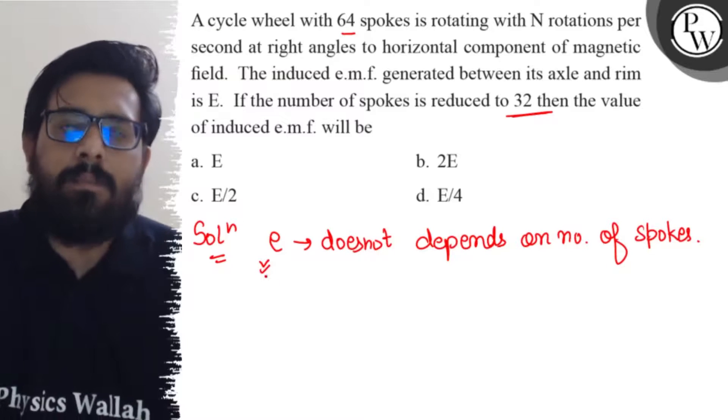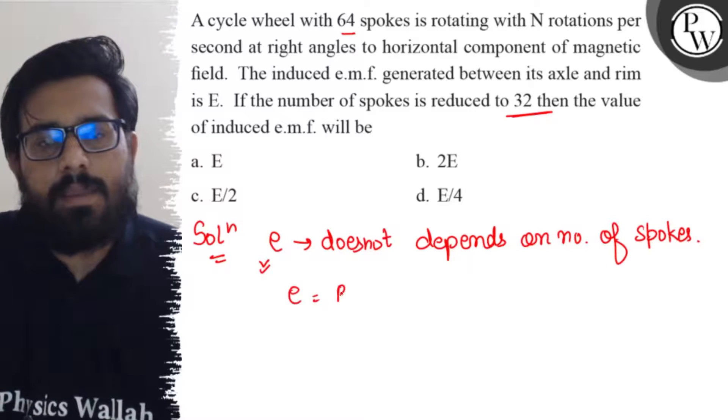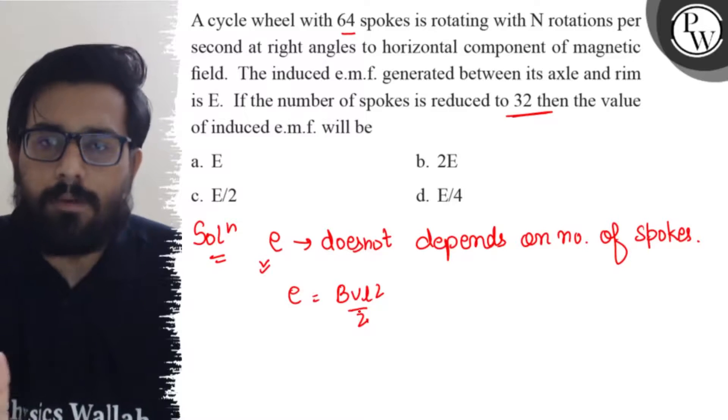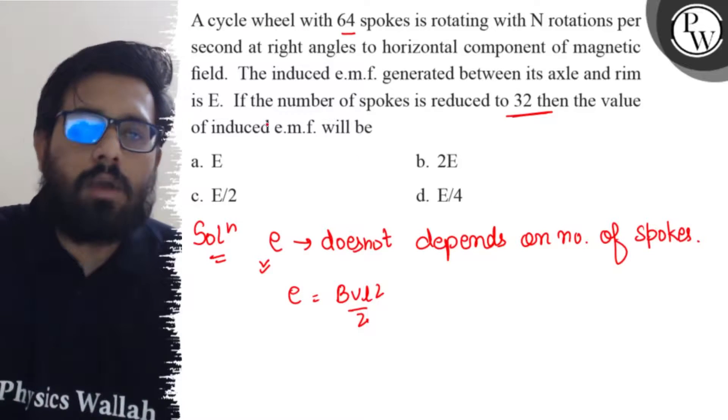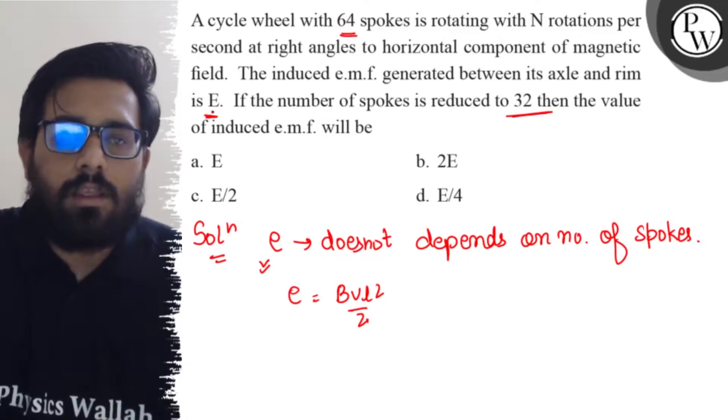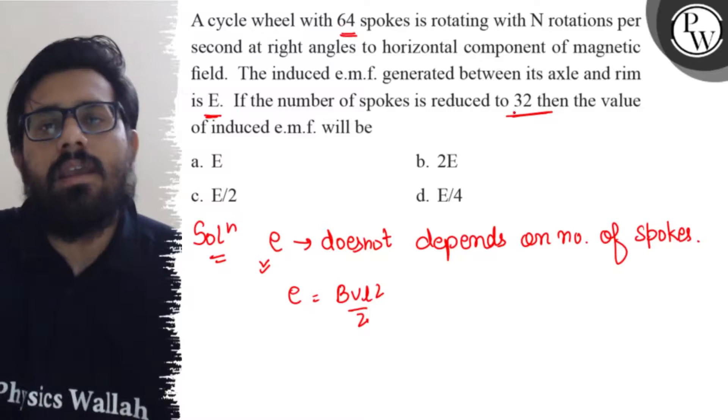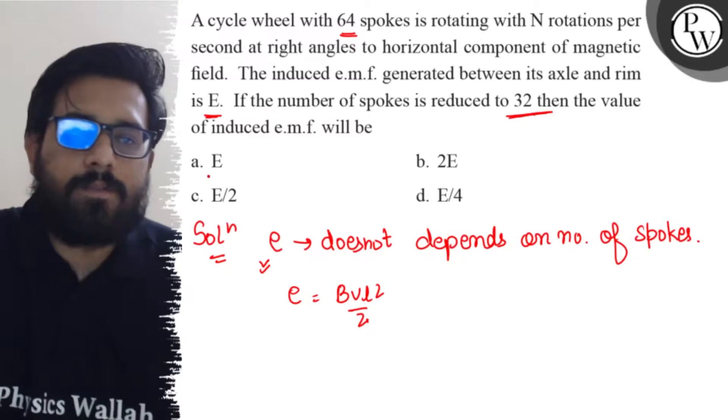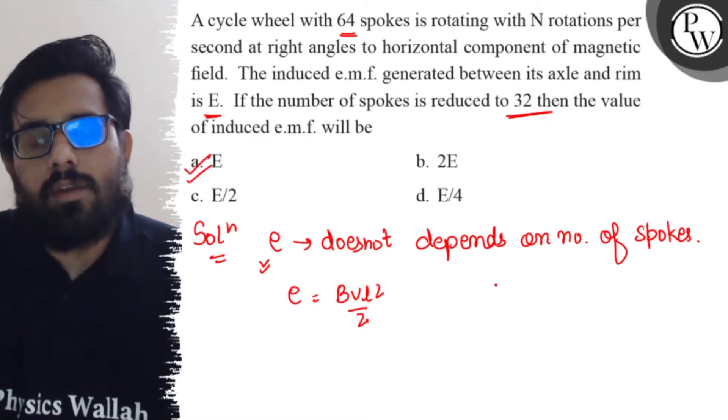And that induced EMF comes out to be BωL²/2. So the number of spokes has no role. The initial induced EMF when number of spokes was 64 is E, so when it becomes 32, the induced EMF will remain E. There will be no change in E.